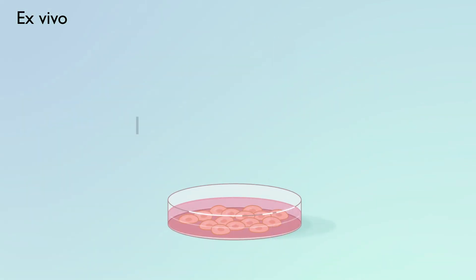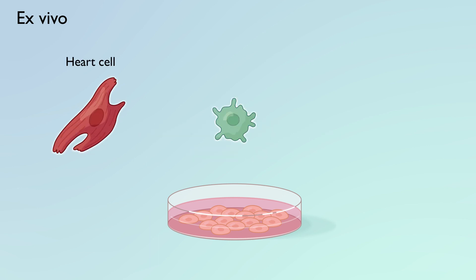Another type of ex vivo therapy uses a different type of stem cell. These cells can make any tissue, even nerves, to treat diseases like Parkinson's.